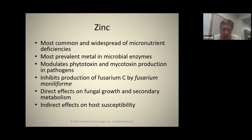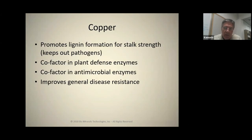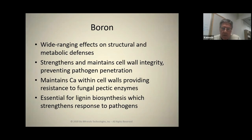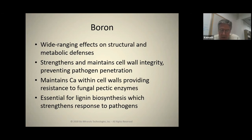Therefore, when components are put together, that which grazes or lives off of the plant material is not going to get the trace elements to function the enzymes within their system. Copper promotes lignin formation. The polyphenol oxidase enzymes run primarily off copper and manganese. Copper is absolutely essential as an antimicrobial, and when you have copper high enough in your soil, you have a broad-spectrum disease suppressant. Boron is very critical for structural and metabolism defense. With calcium, it maintains the strength and integrity of your cell walls, preventing pathogen penetration, and maintains calcium within the cell to provide resistance to pathogenic organisms.